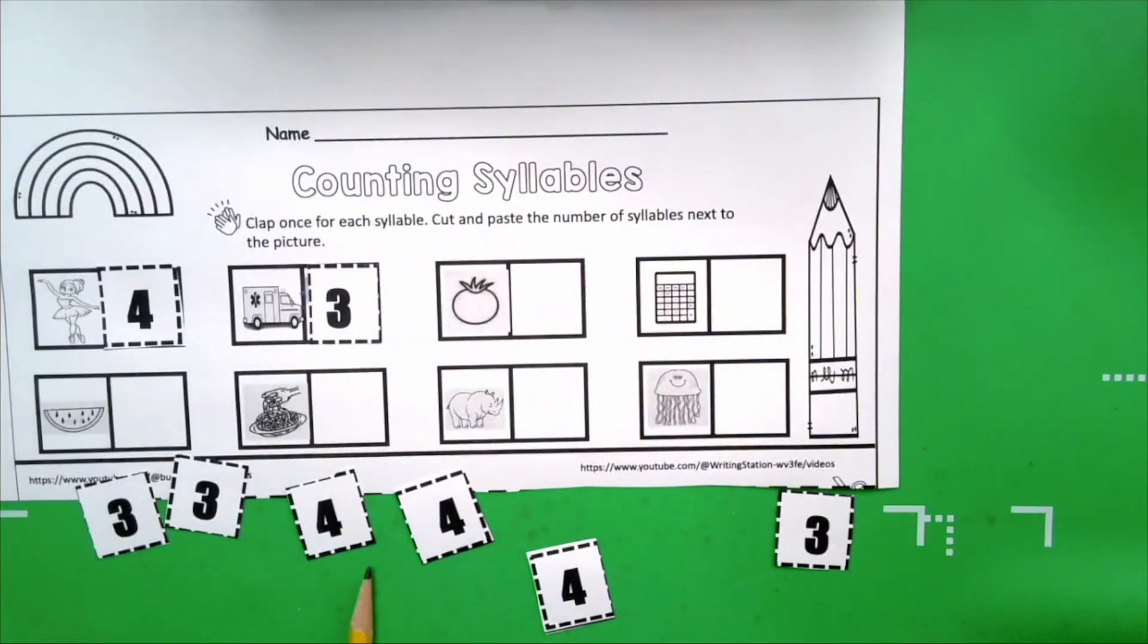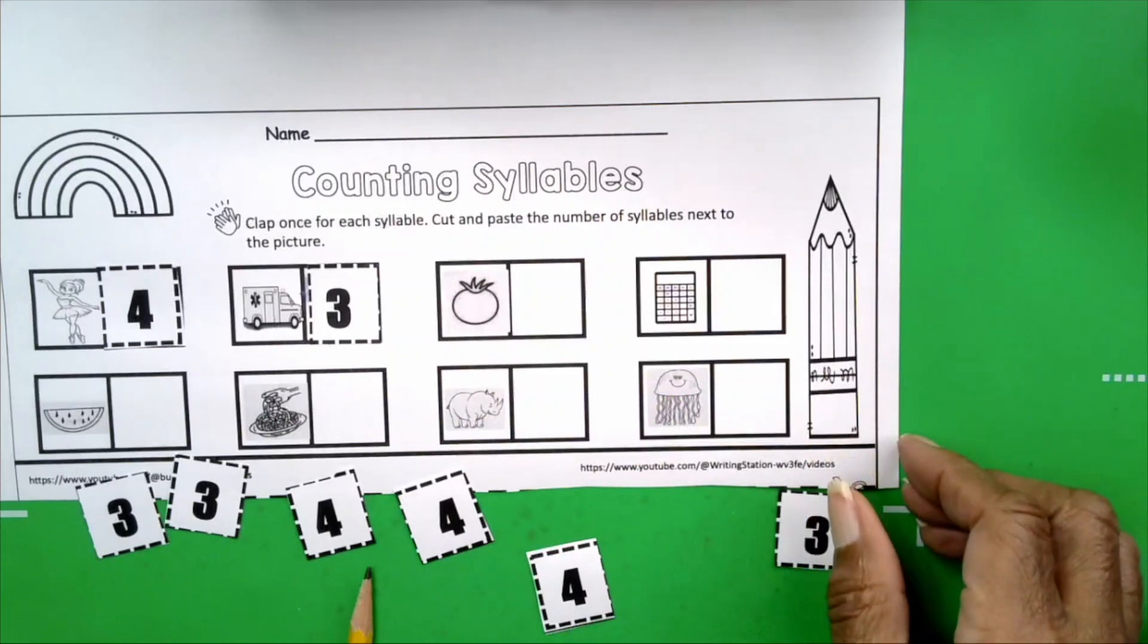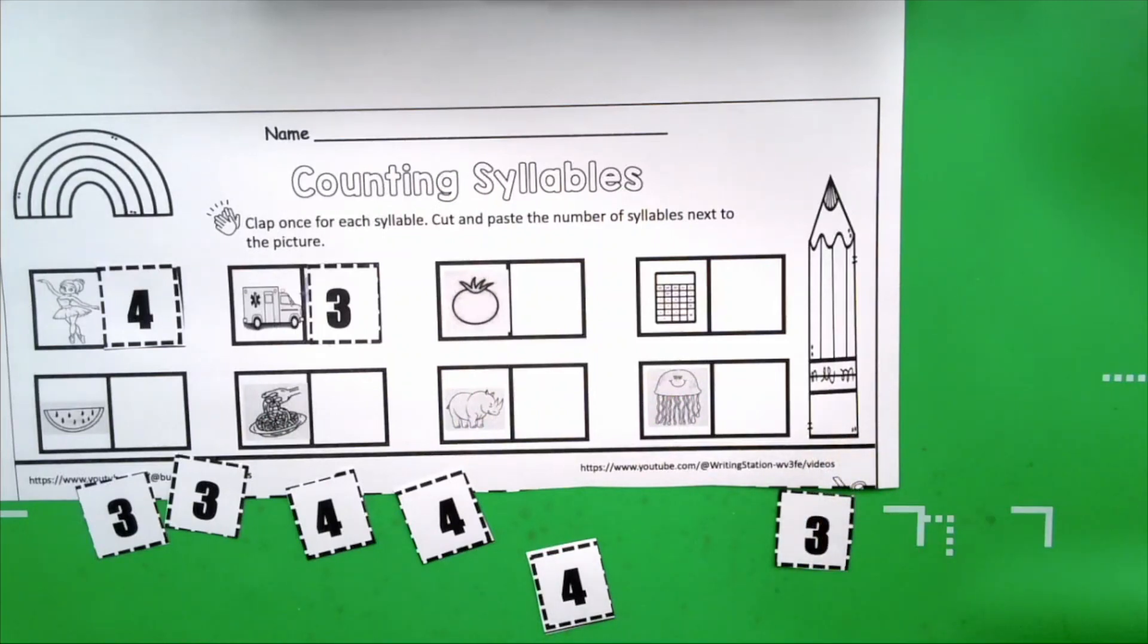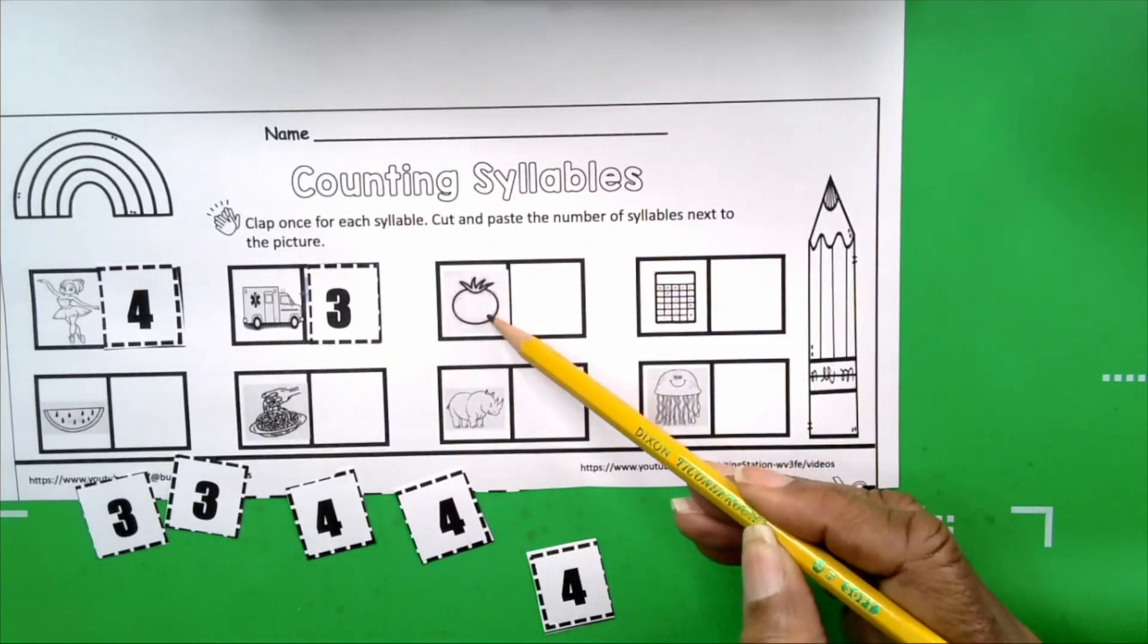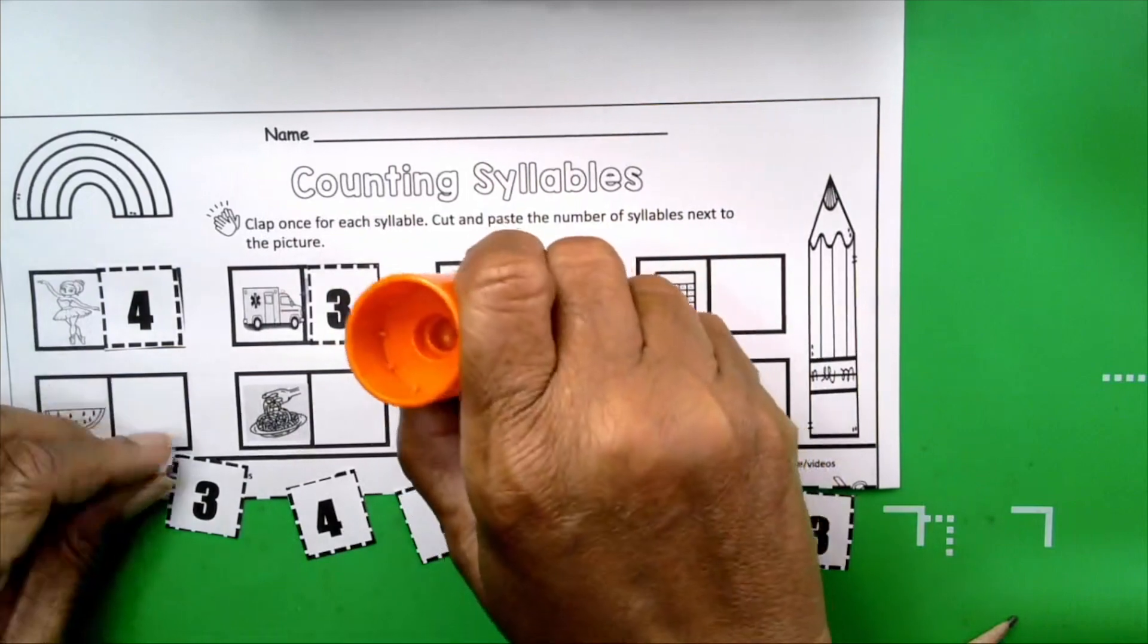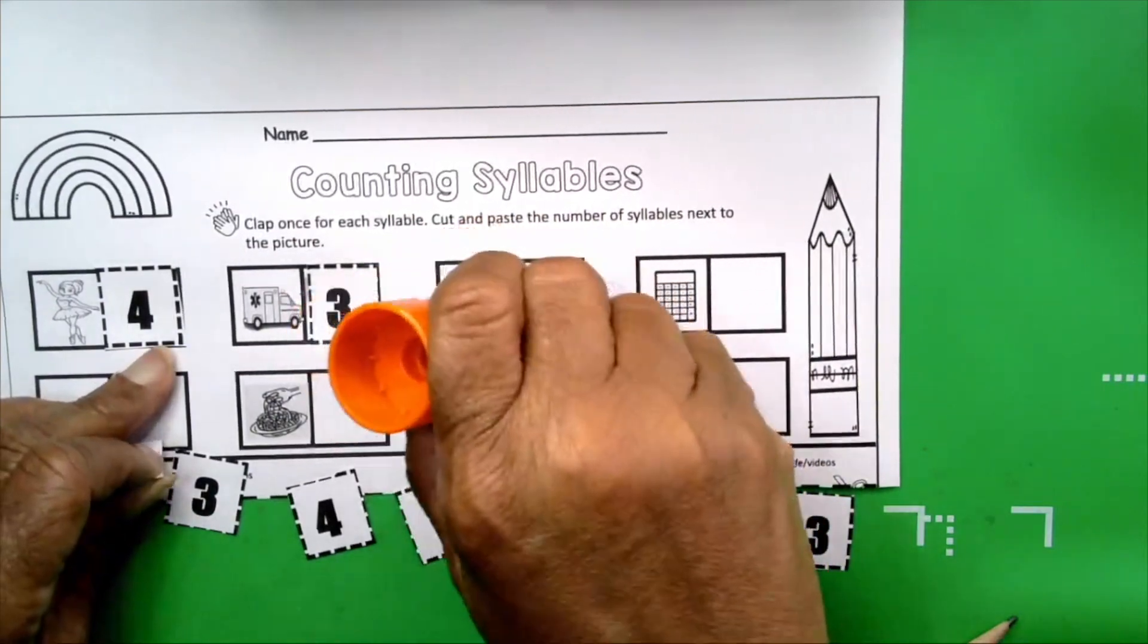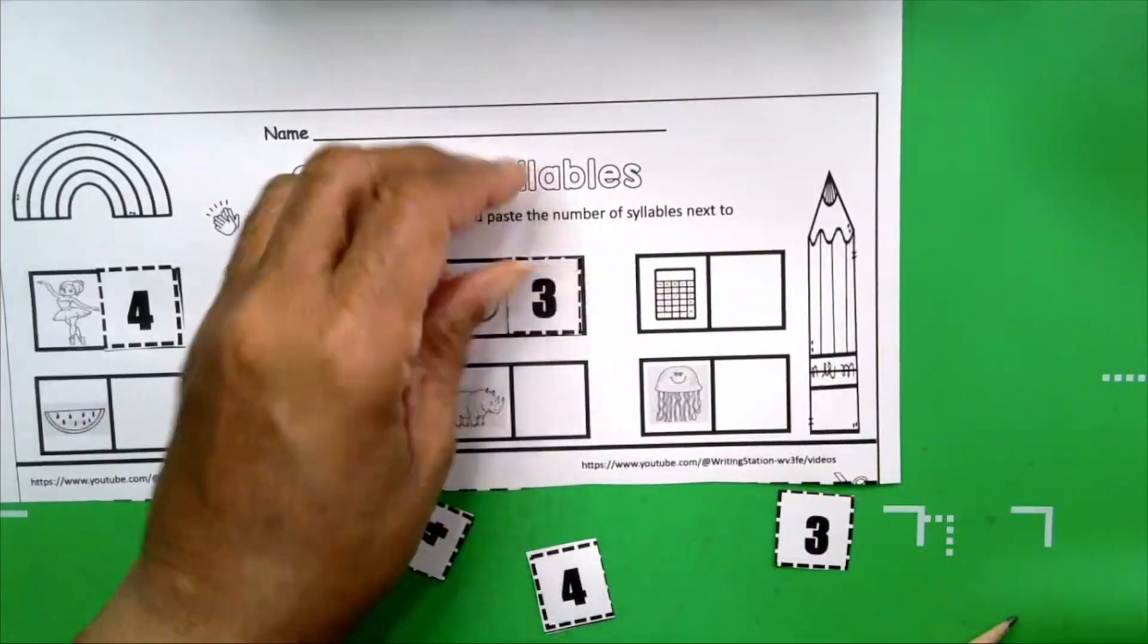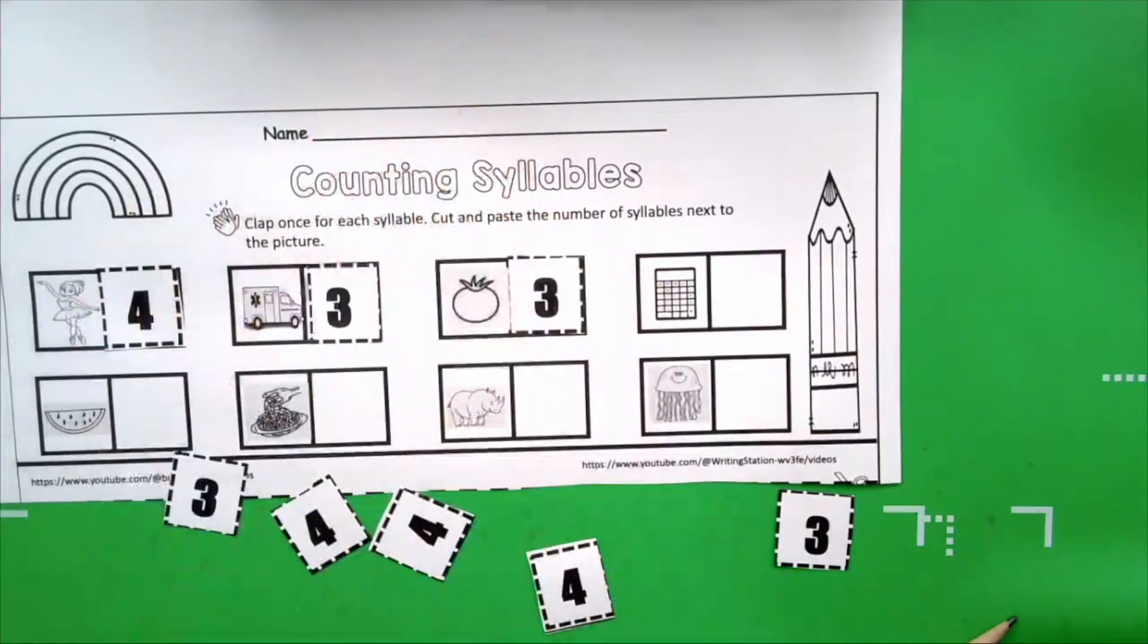You're doing just fine so far. This is a tomato. Tomato. Ready? Get your hands ready. Tomato. How many claps? Three. How many syllables are in the word tomato? Three.